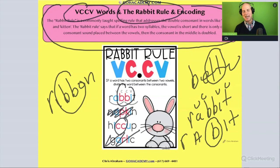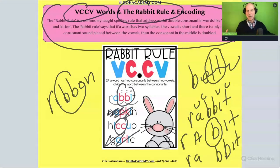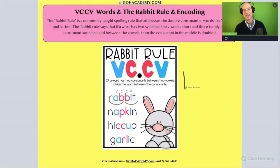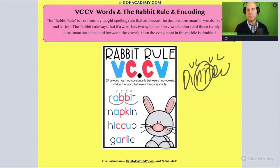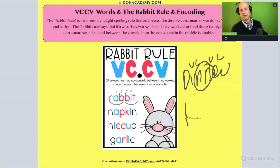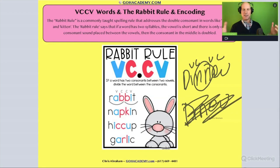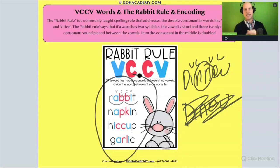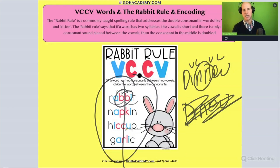That middle consonant sound should be doubled when we spell it. That's why we double the consonants in words like rabbit, ribbon, or better — we have two closed syllables and a single middle consonant, so we double that letter. This is the encoding rule; if you were decoding, you'd use the VCe rule, but for encoding this is why you use double letters for rabbit, hiccup, and diner.